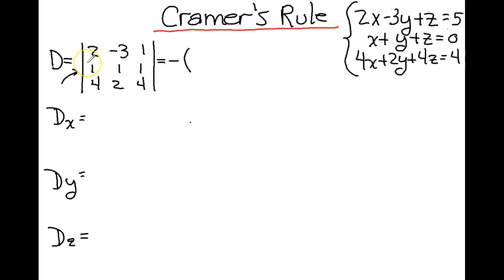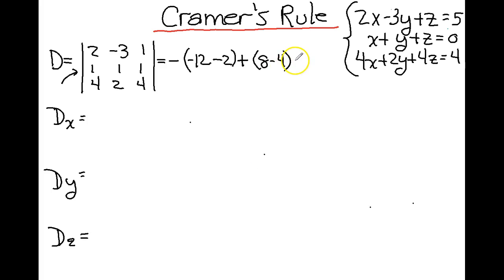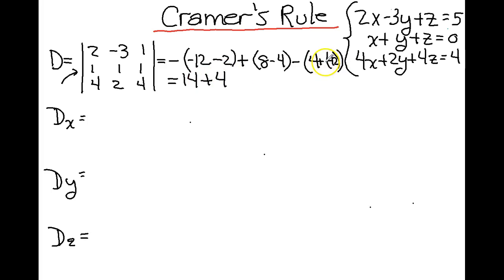I'm going to subtract my first minor: negative 3 times 4 is negative 12, minus 2 times 1 is 2. I'm going to add my next minor: 2 times 4 is 8, minus 4 times 1 is 4. And lastly, I'm going to subtract my last minor: 2 times 2 is 4, minus 4 times negative 3 is negative 12. So this gives negative 14 times negative 1 is positive 14, plus 4, minus 16. The determinant of our coefficient matrix equals 2.